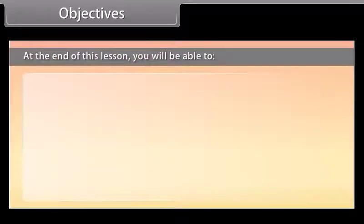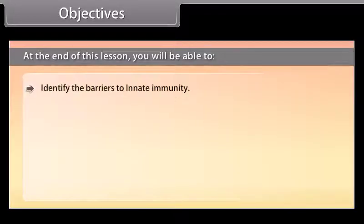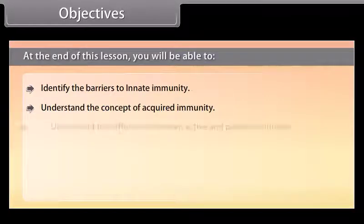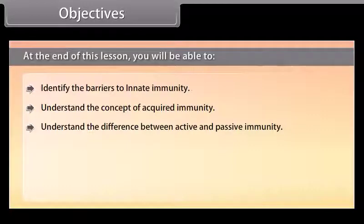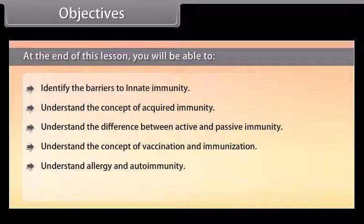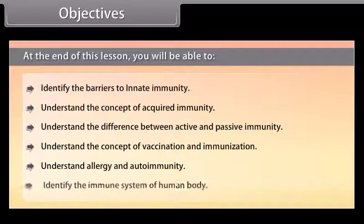At the end of this lesson, you'll be able to: identify the barriers to innate immunity; understand the concept of acquired immunity; understand the difference between active and passive immunity; understand the concept of vaccination and immunization; understand allergy and autoimmunity; and identify the immune system of the human body.